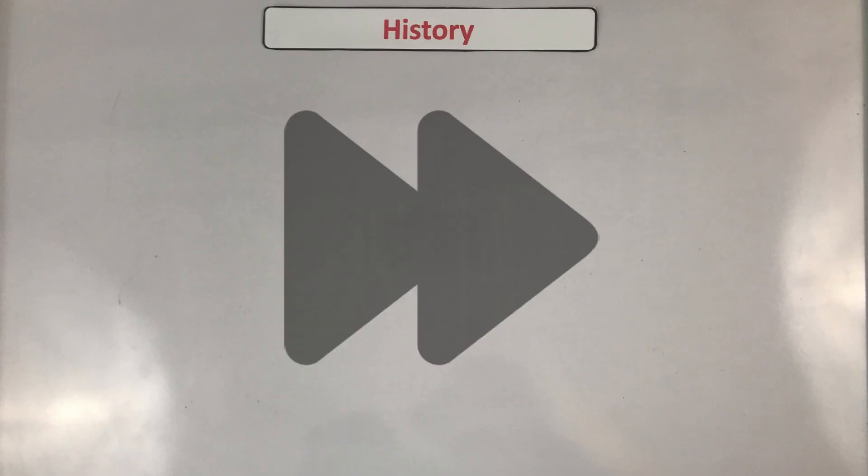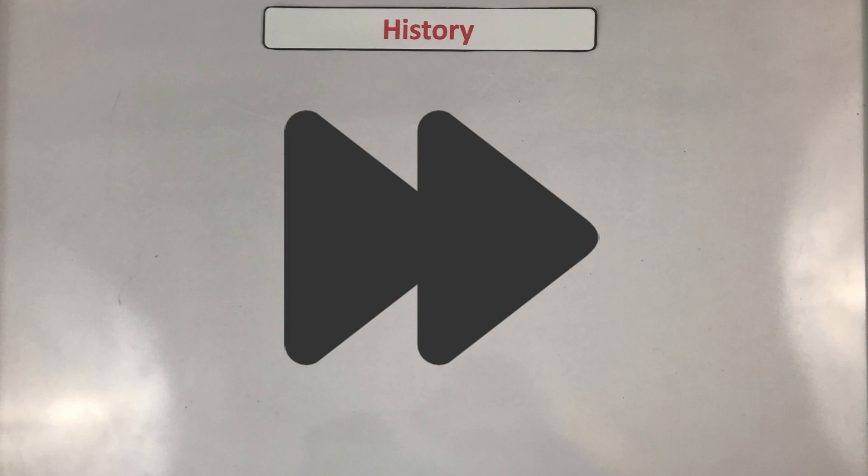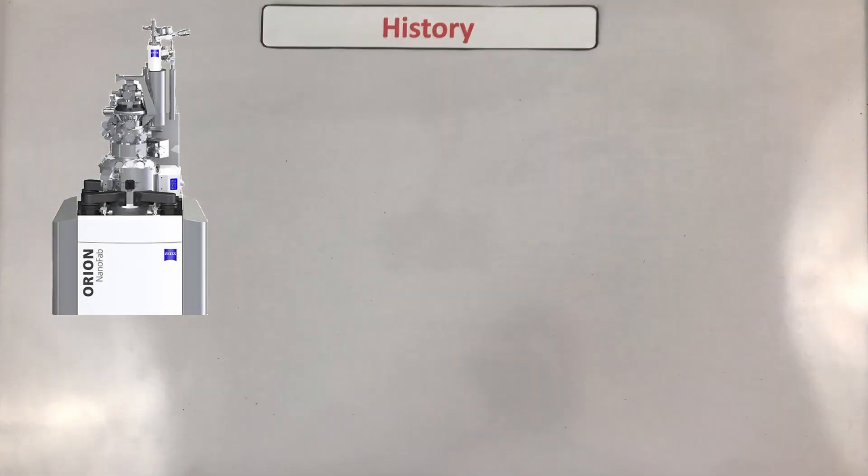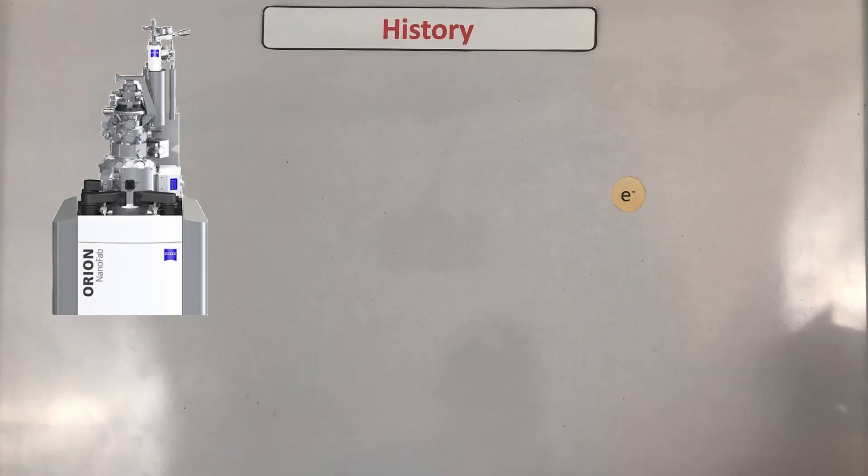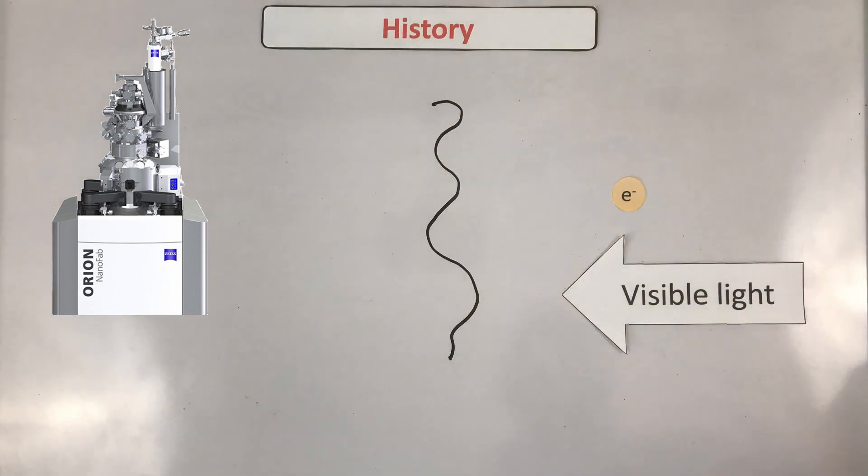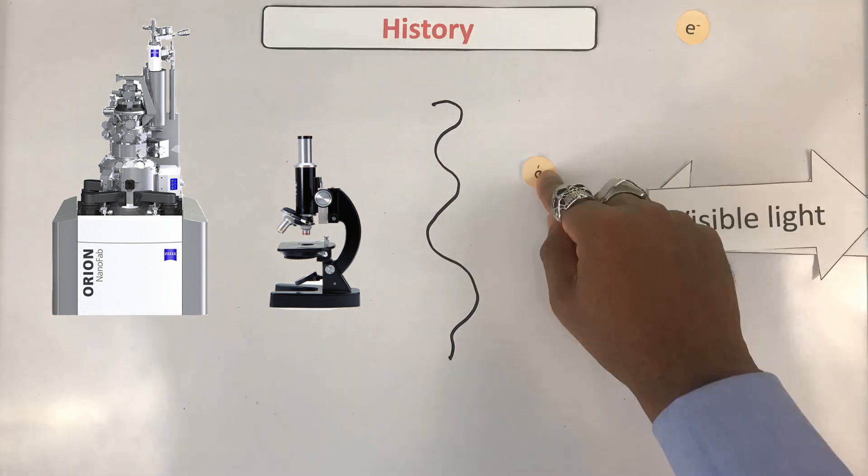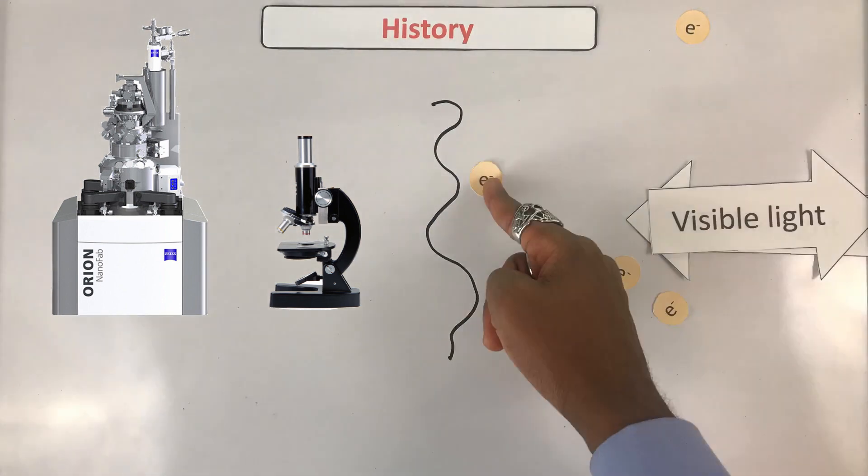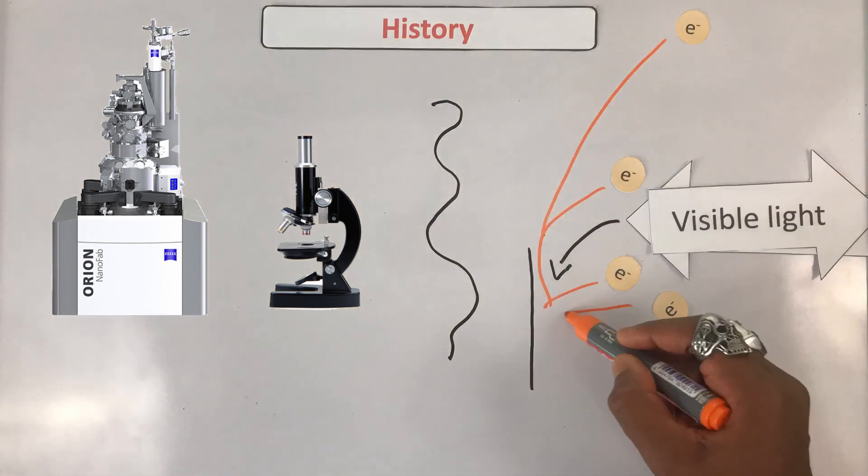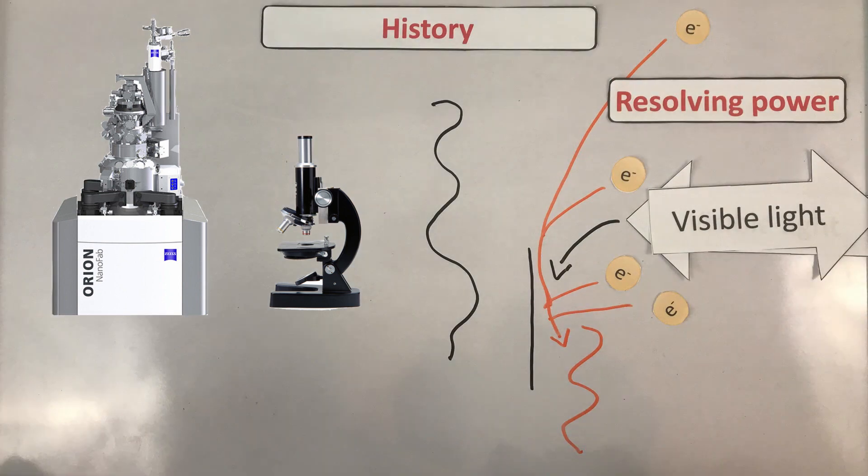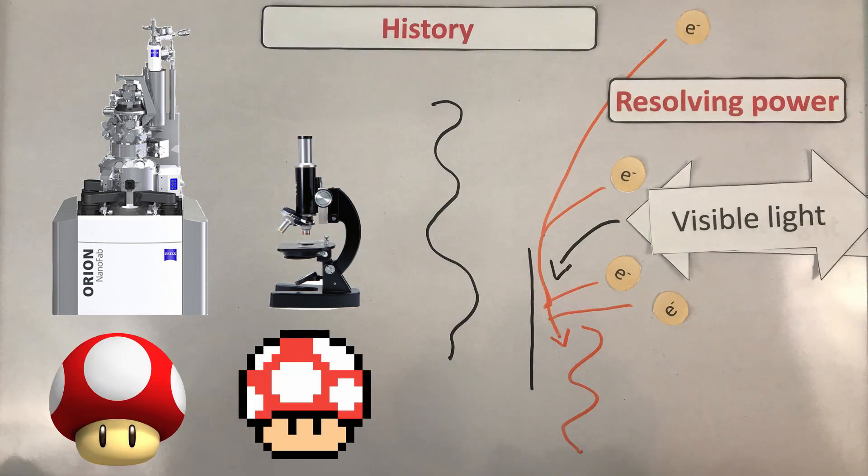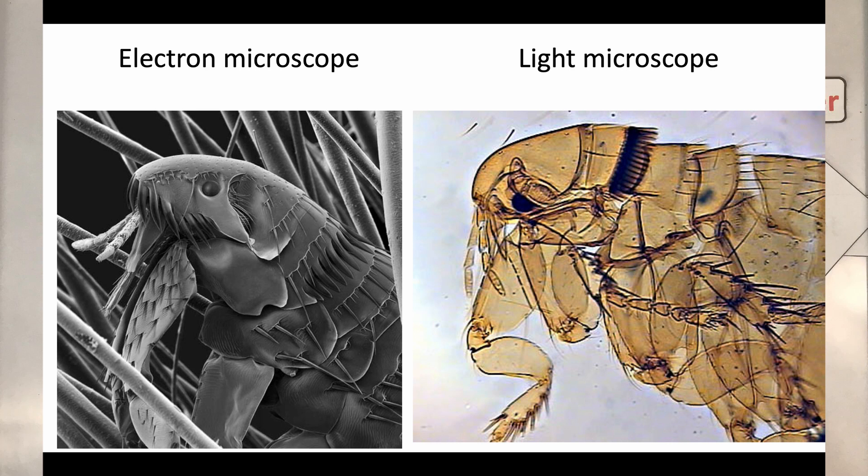Now fast forward to the 1930s, a couple of scientists invented the electron microscope which used electrons instead of light. Since electrons are so much smaller than visible light, they're better able to bounce off all the small indentations of objects and carry that shape back to your detector. This means that electron microscopes have a better resolving power. This is the ability to distinguish between two separate points. The higher the resolution, the more details you can see. Just look at the difference in the detail.